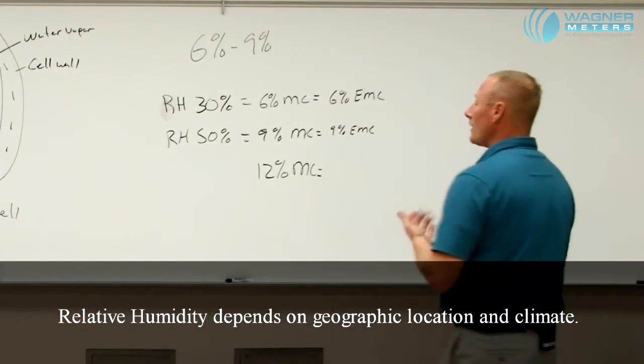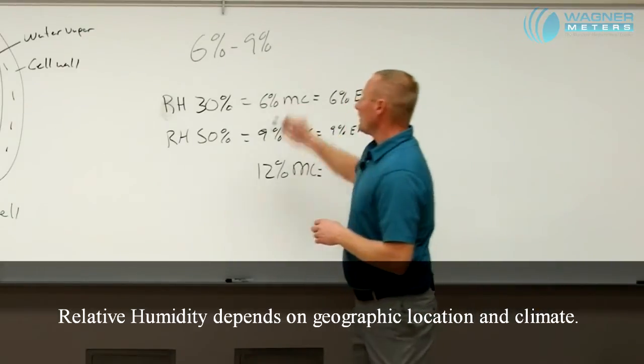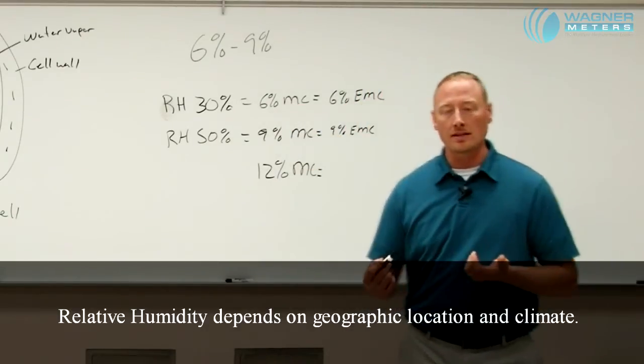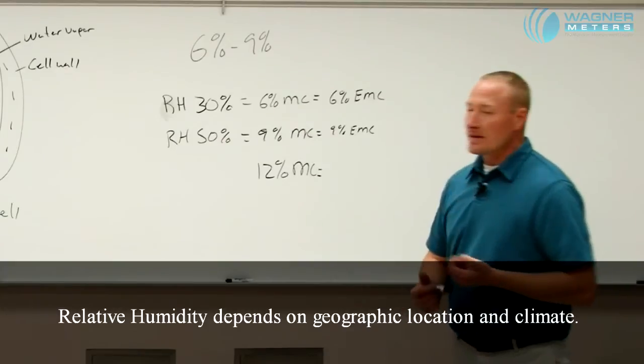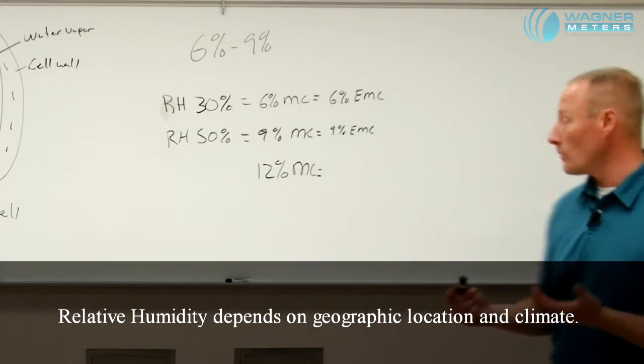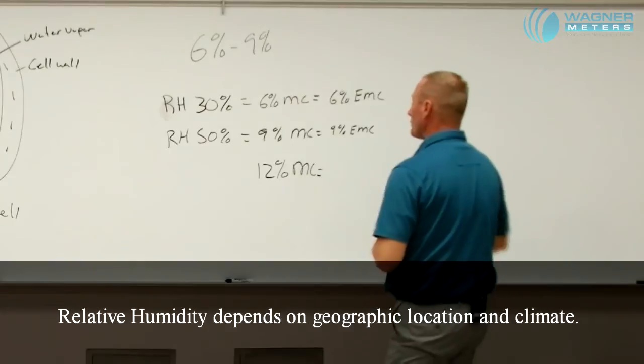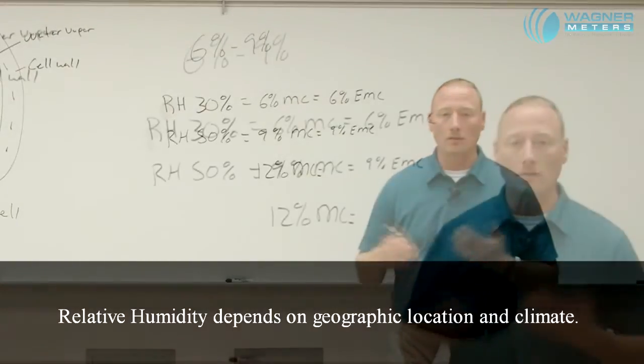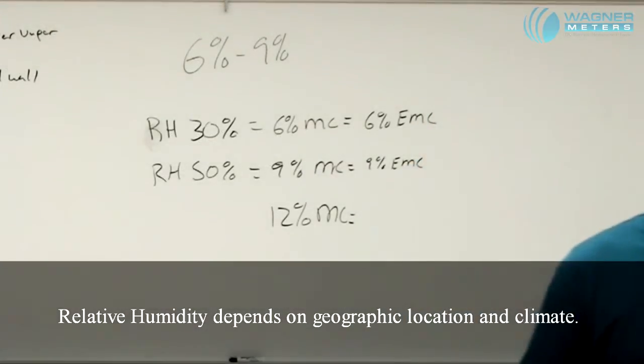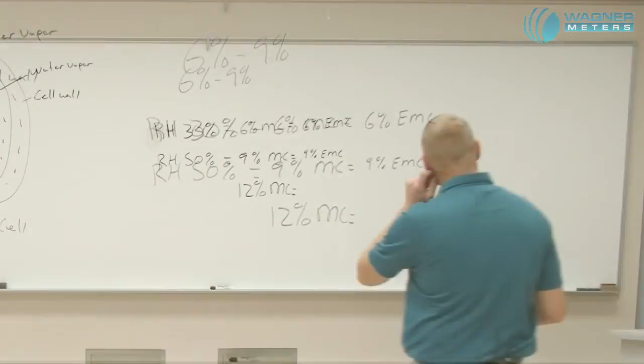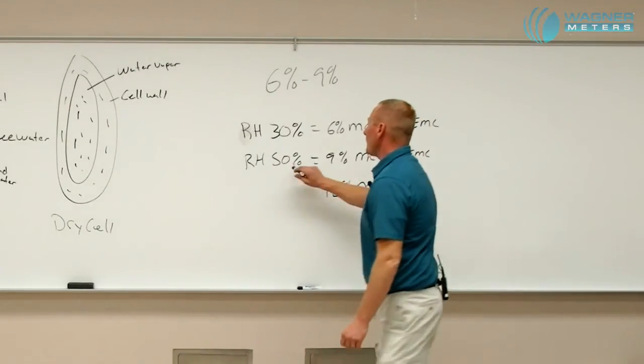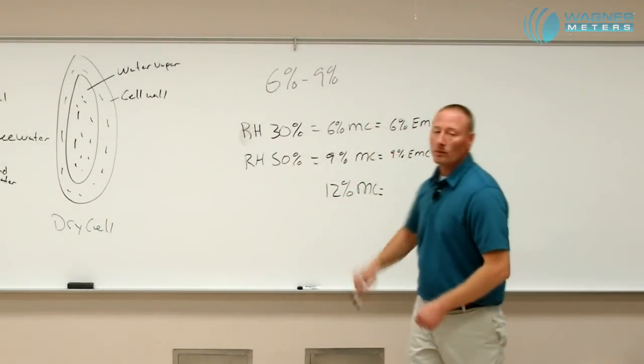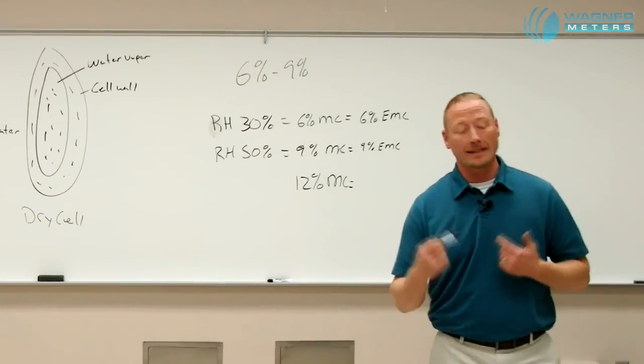In a very dry arid climate, it may be much closer to the lower side. That 12 percent moisture content in exterior environments could actually be even higher - closer to 16 percent. Making sure that we know what our moisture content is and knowing that relative humidity is the main factor controlling our moisture content is very important.